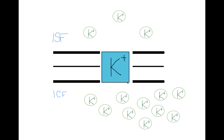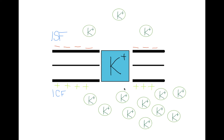Inside the cell membrane, we also have a potassium channel. Now this potassium channel, when it is open, will allow potassium to flow through it. Now because potassium has a positive charge, and therefore is a cation, the side with the most potassium will have the greatest positive charge. So in our hypothetical cell here, since the intracellular fluid has much more potassium than the interstitial fluid, the inside of the cell will have a relatively more positive charge than the outside of the cell.